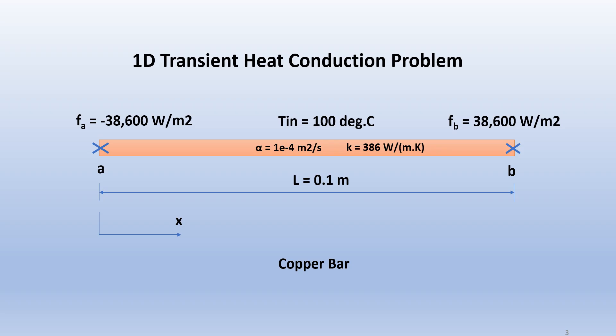Alpha, which is the thermal diffusivity of the material, is 1×10⁻⁴ meter squared per second, and K, the thermal conductivity of the material, is 386 watts per meter Kelvin. Our coordinate direction is shown in the sketch below.